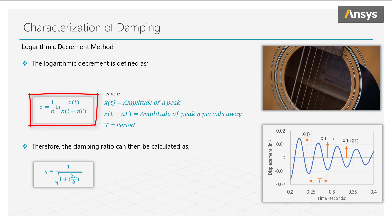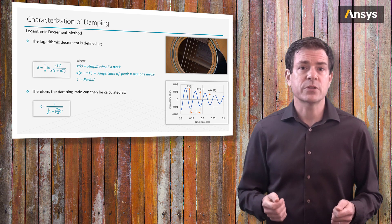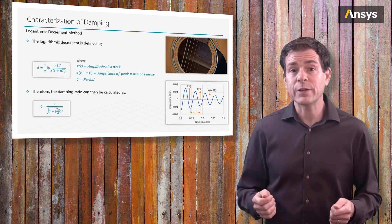Substituting these values in this equation, the logarithmic decrement is computed. It is then substituted into this equation to compute the damping ratio. This method is most commonly used when there is a single dominant frequency in free vibration problems.